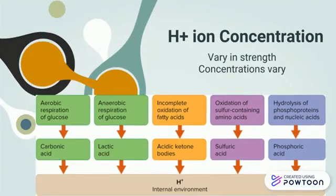The acids resulting from metabolism vary in strength. Therefore, their effects on hydrogen ion concentration of body fluids vary accordingly.